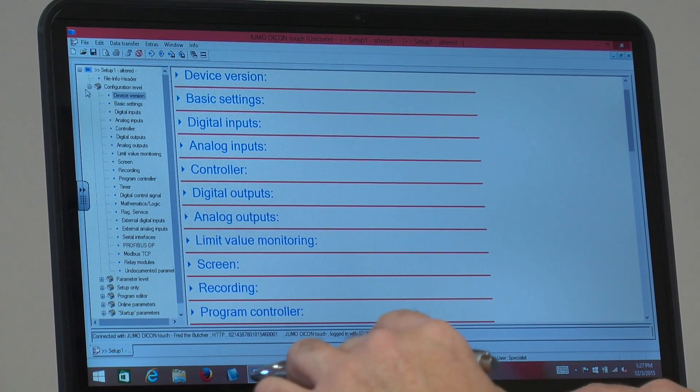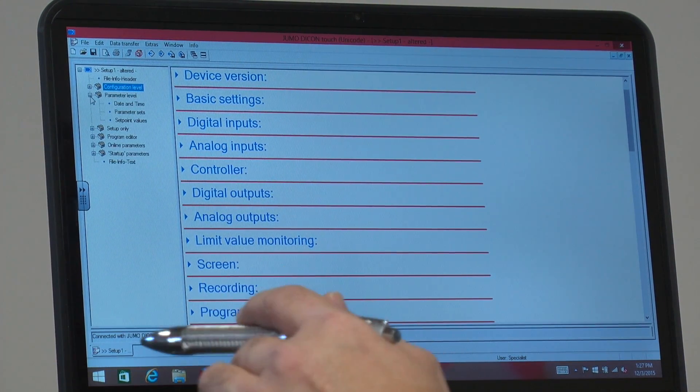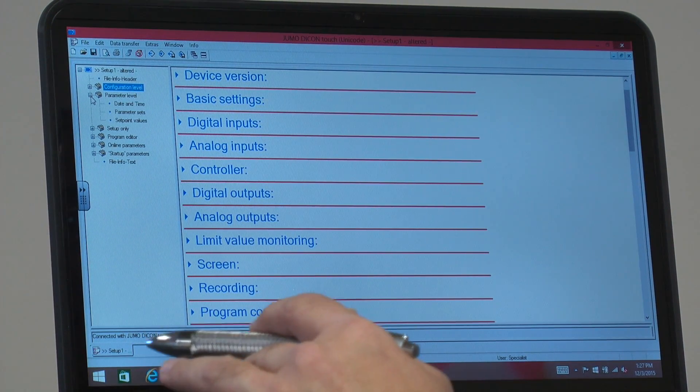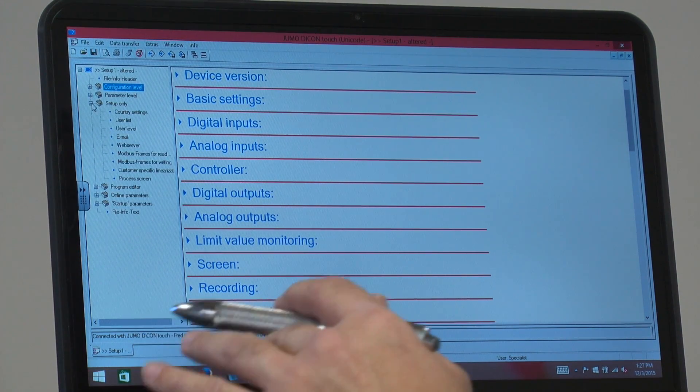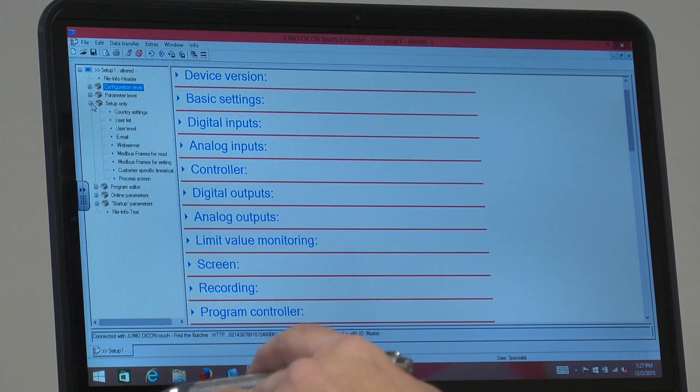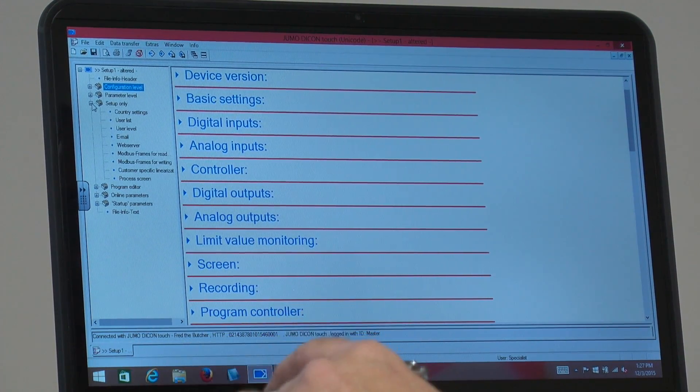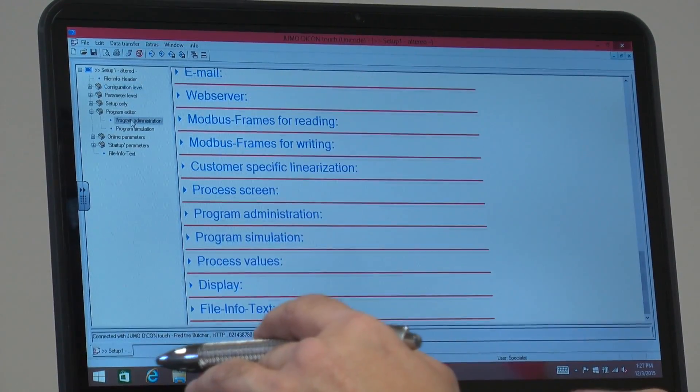Then further down here there's a few other menus. You could set up the clock. You can have the unit turn on and off depending on the date and time. There's language and email and web server. All those capabilities if you bought the unit with those options you could program them there.